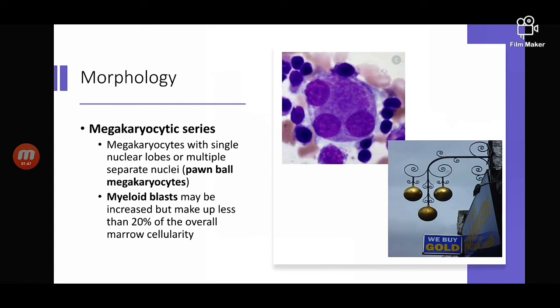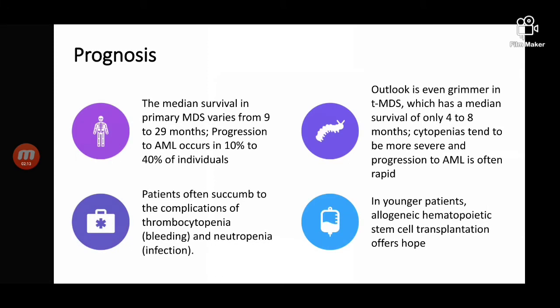In megakaryocytes, the specific abnormality seen is called a pawnball megakaryocyte — named after the pawnball structures seen outside pawn shops. The most important feature of MDS is that the myeloid blasts, though increased in number in the bone marrow, are not more than 20 percent.